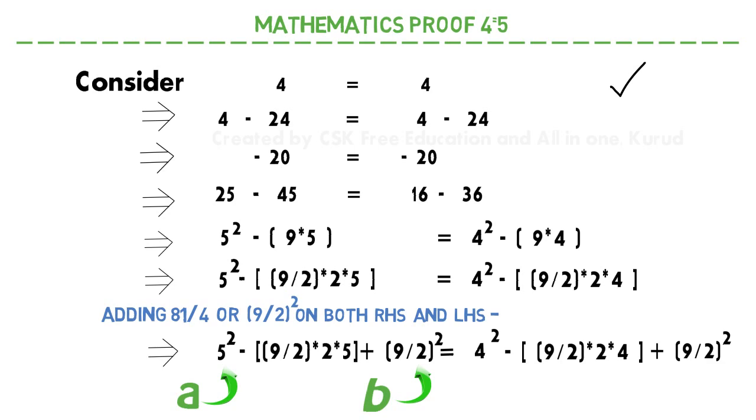So I can transform this equation in the form of A minus B whole square. I would be getting 5 minus 9 by 2 whole square. In the same way I can transform the right hand side as well. I would get 4 minus 9 by 2 whole square.